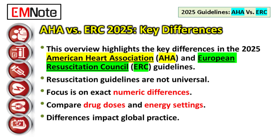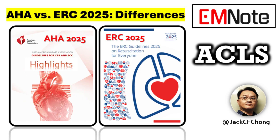Understanding precisely where the AHA and ERC differ on these specific numbers — the milligrams, the joules — directly impacts how you practice, especially if you work across different systems or try to synthesize the best global knowledge.